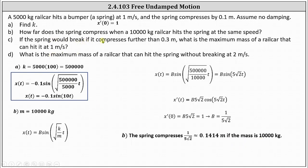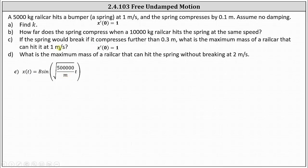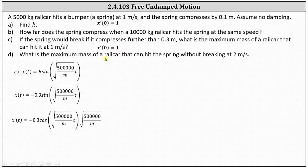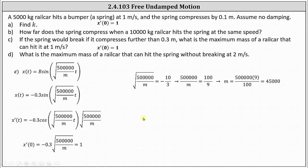For Part C: if the spring breaks when compressed further than 0.3 meters, what is the maximum mass of a rail car hitting it at one meter per second? With b = −0.3 and k = 500,000, x'(t) = −0.3·√(500,000/m)·cos(√(500,000/m)·t). Using x'(0) = 1: −0.3·√(500,000/m) = 1. Multiplying both sides by −10/3, squaring, and multiplying by m: m = 500,000 × 9/100 = 45,000 kilograms.